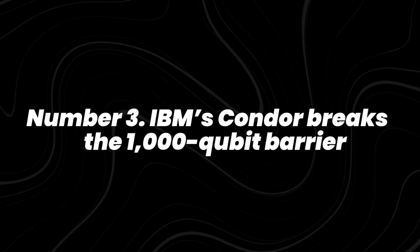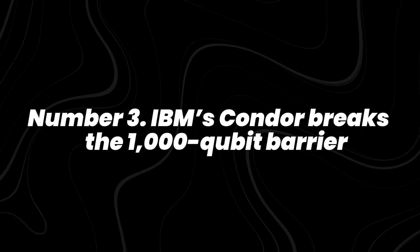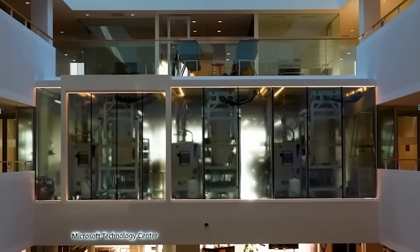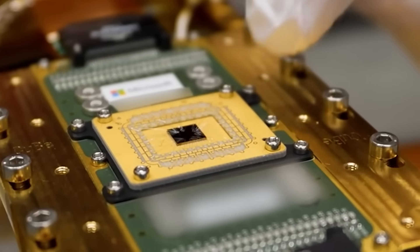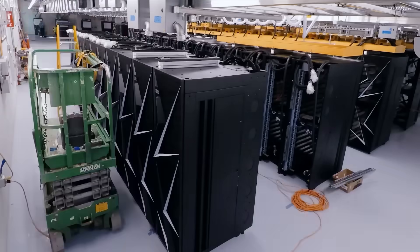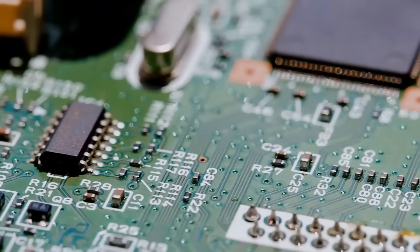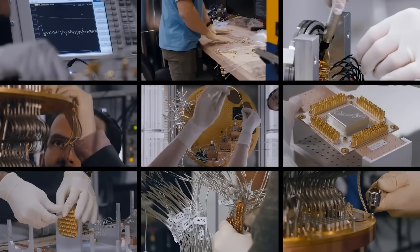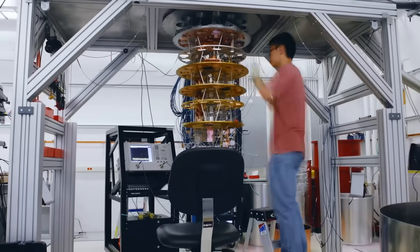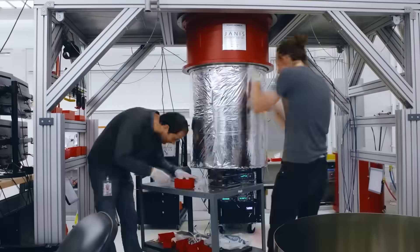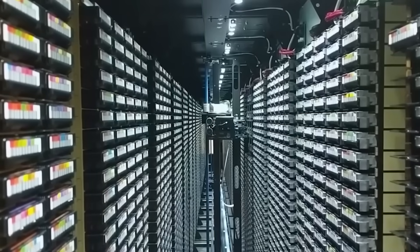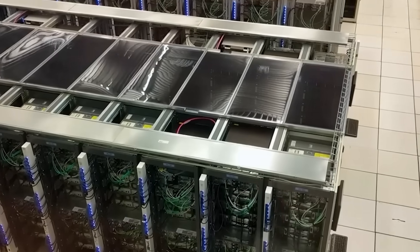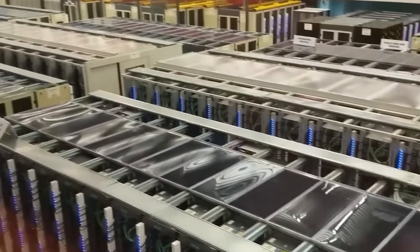Number 3. IBM's Condor breaks the thousand-qubit barrier. For years, quantum processors grew slowly from single digits to a few dozen qubits. In 2025, IBM crossed a symbolic milestone with Condor, a superconducting chip containing 1,121 qubits. It's the largest publicly reported quantum processor to date. This does not automatically mean it can outperform classical supercomputers, but it represents a major leap in engineering.